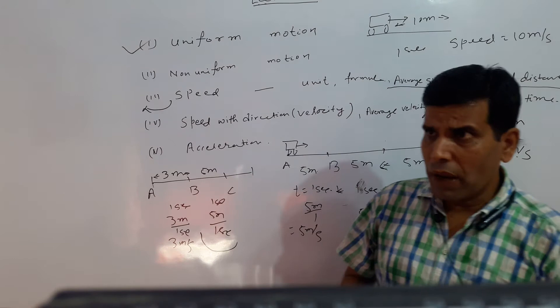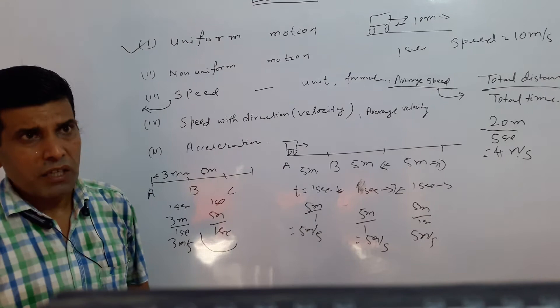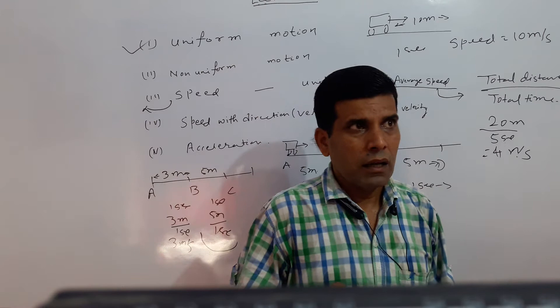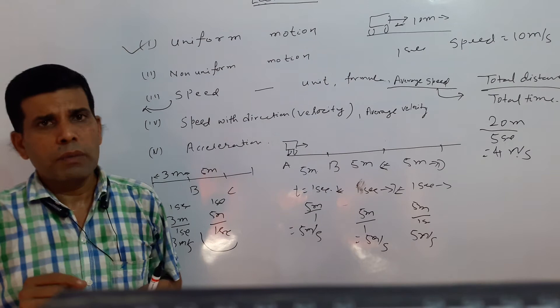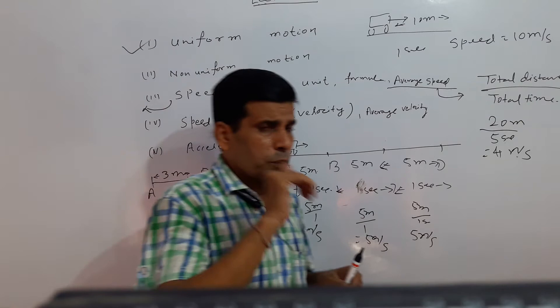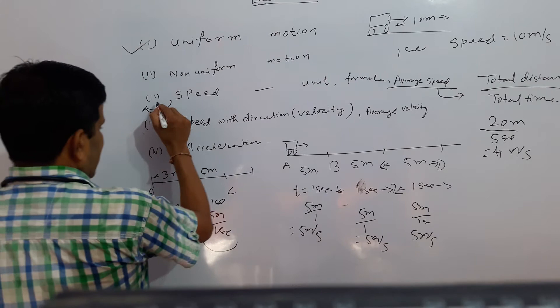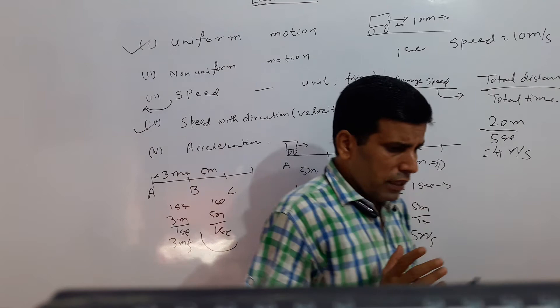Then one concept is also instant speed. Instant speed means — for example, while a bike is traveling, calculating speed is tough. But at one particular instant, what is your speed at that exact moment — that value is called instant speed. So there are three concepts: uniform speed, average speed, and instant speed.